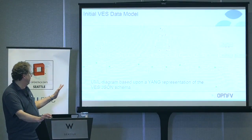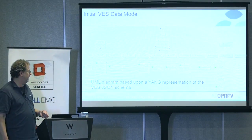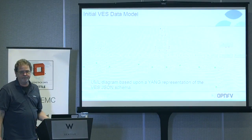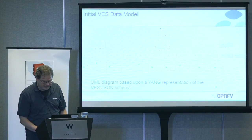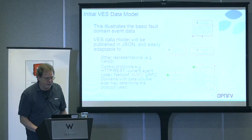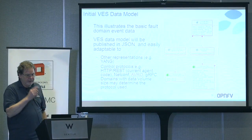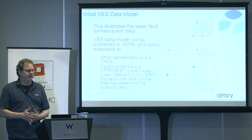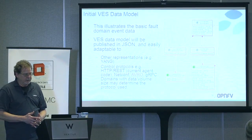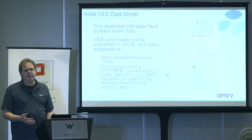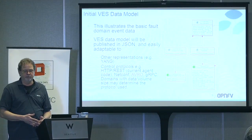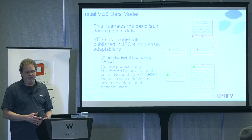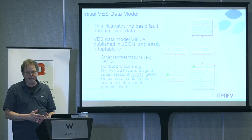This is a UML diagram based on a YANG representation of the JSON schema. That's a key point because we're going to publish this in JSON to keep it simple — we're using JSON Schema to define it. It's very easy to convert that to YANG to use it in any kind of telemetry system that's based on YANG, for example the OpenConfig project, which on GitHub has many YANG models for different types of network devices and functions.